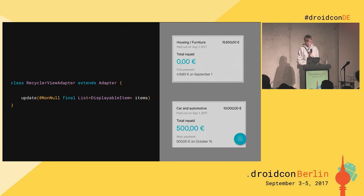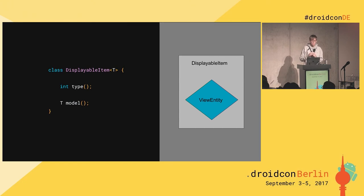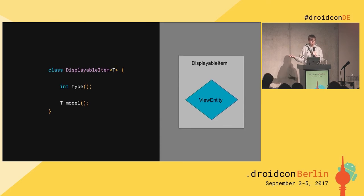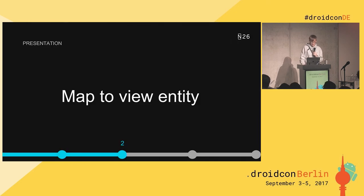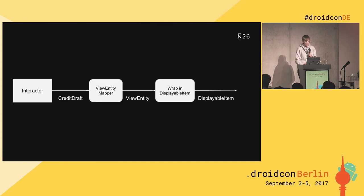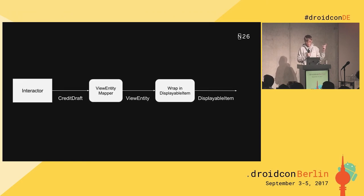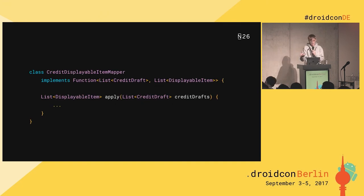Our adapter takes DisplayableItems, not the view entity directly. A DisplayableItem is a simple wrapper object for what we want to present in a list — it has a type so the adapter knows which ViewHolder to use, and it has the model, in this case the view entity. The mapping step has two parts: first convert the CreditDraft to a view entity, then wrap it in a DisplayableItem. So we have that mapper — it's just a function with a list of CreditDraft as input and a list of DisplayableItem as output.